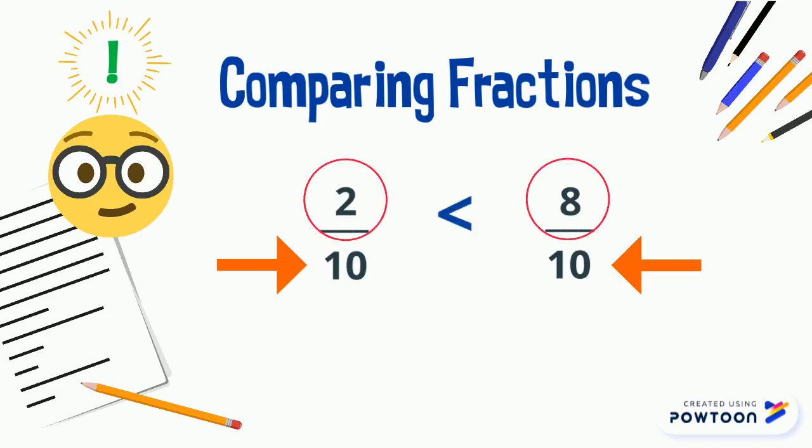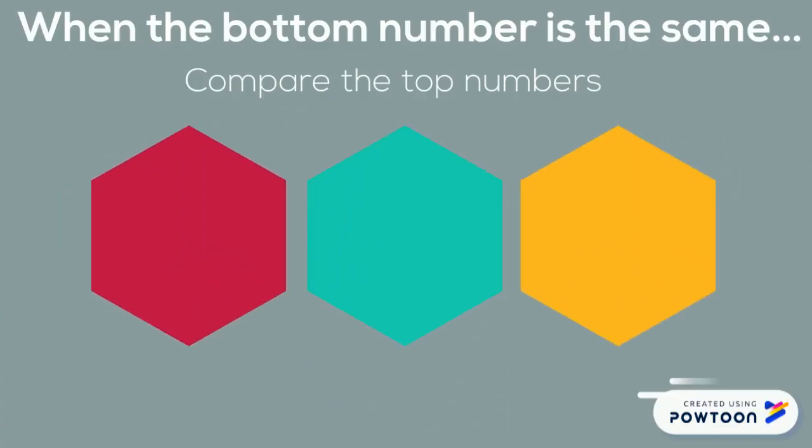So eight-tenths is the larger fraction. When the bottom number is the same, it's easy to compare. Pac-Man likes to eat the bigger piece, so he will want to be facing eight-tenths.